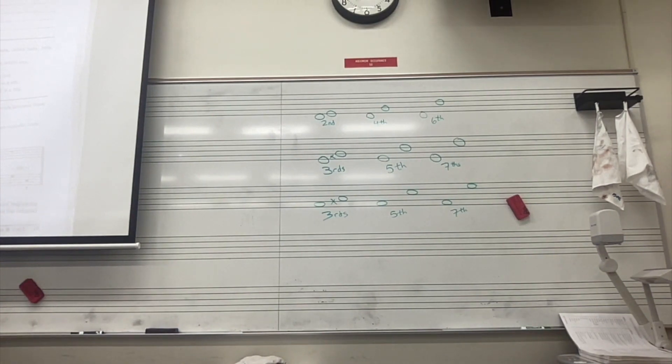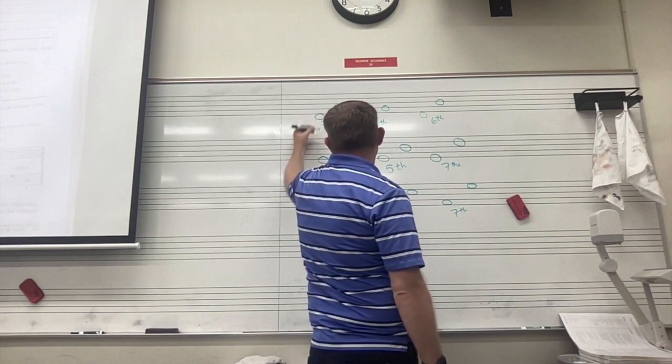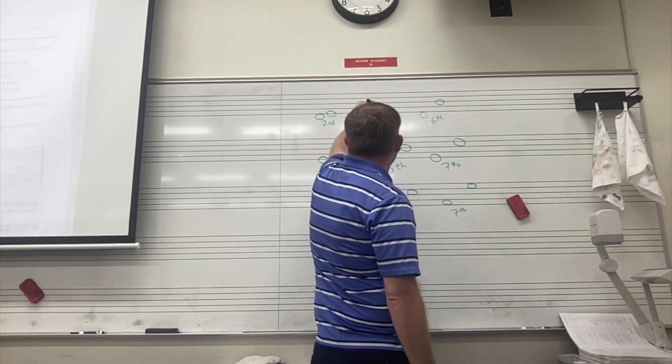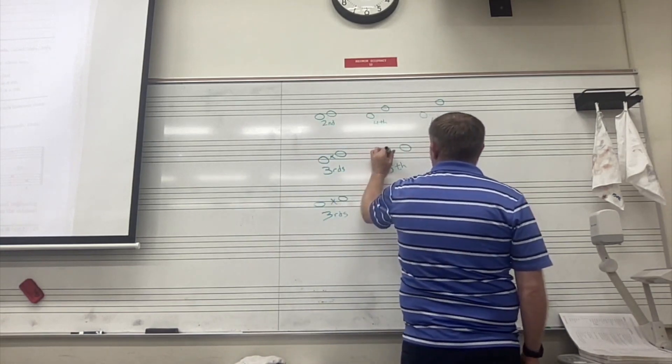So all you got to do is be able to count lines and spaces. One, two, it's a second. One, two, three, it's a third. One, two, three, four, it's a fourth. One, two, three, four, five, it's a fifth.